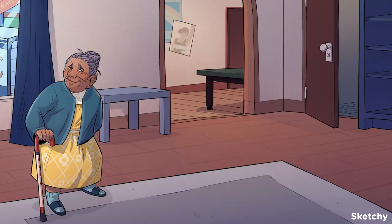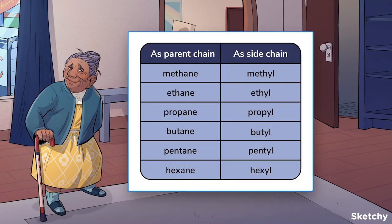But organic molecules aren't just parent chains. There will often be other chains of carbons branching off the parent — those are called side chains. When an alkane is a side chain, it takes on the "-yl" suffix, Y-L. So if a side chain is just a CH3 group, we call that group methyl. If it has two carbons, it's called ethyl. Then propyl, butyl, and so on.